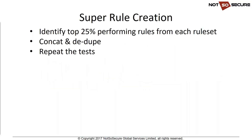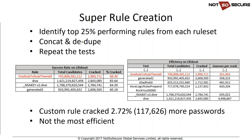For the super rule, I identified the top quarter-performing rules from each rule set, concatenated them, deduplicated, and repeated the tests. One rule to rule them all did come out on top: a 2.72% increase in success rate, equating to just over 117,000 additional cracked passwords. It wasn't the most efficient, but also wasn't as expensive as the dive rule at 1.5 trillion candidates or the non-standard NSA or Core Logic rules.